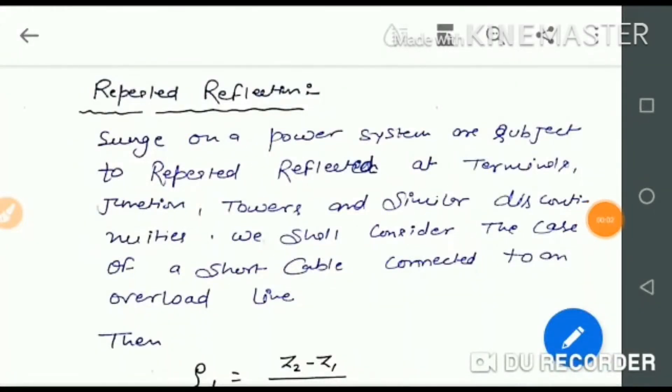Good morning students, today we will discuss repeated reflection. Repeated reflection is when a signal traveling along an electrical transmission line will be partly or wholly reflected back in the opposite direction when the traveling signal encounters a discontinuity in the characteristic impedance of the line.